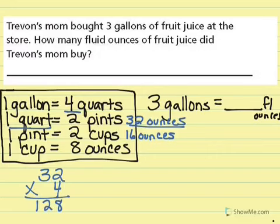So 128 ounces is going to be 1 gallon. I'm running out of room. So if we have 3 gallons, I'm going to multiply 128 times 3.